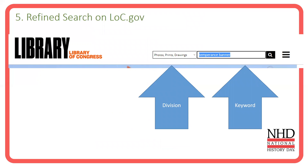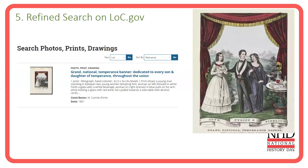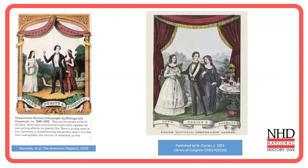In the upper right-hand corner of loc.gov, I use the search bar with my keyword and limit to the division. I don't want to see temperance banners in the maps or music division — I want to look in photos, prints, and drawings, because that's what I'm looking for in my project. When I do that, I find a source. Interestingly, this one doesn't have a woman in a red dress but instead a bluish, purplish dress. Let's look at these two images side by side.